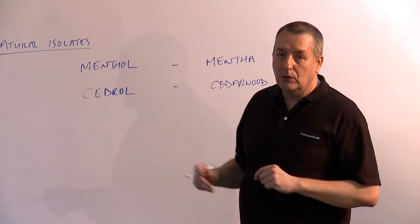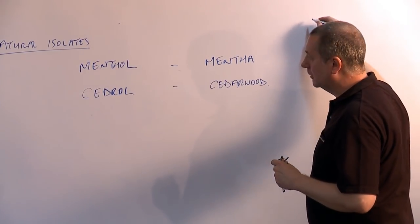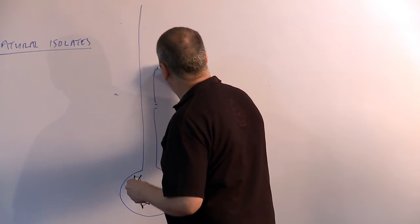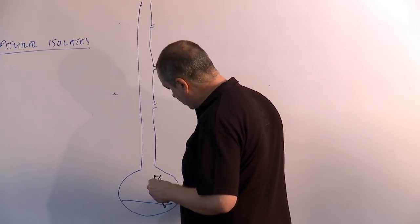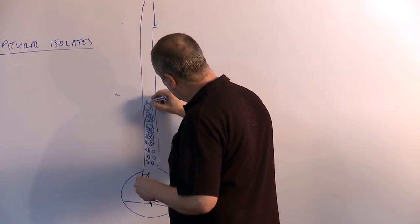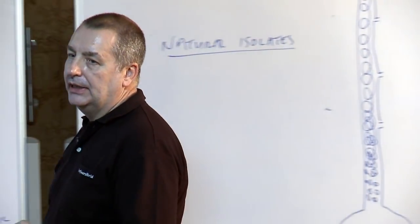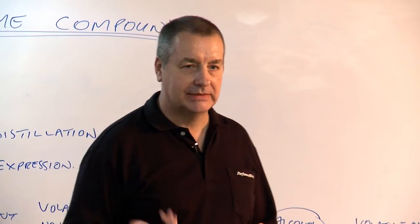Now that's using cooling. Another alternative is we can heat. So in heating, we use a thing called fractional distillation. Fractional distillation is the same thing that they use in oil refineries to separate hexane from pentane.